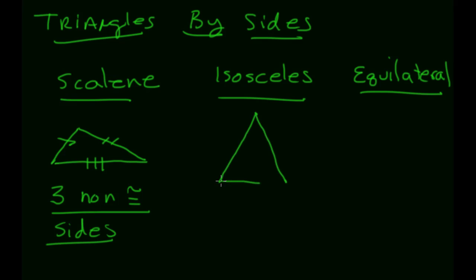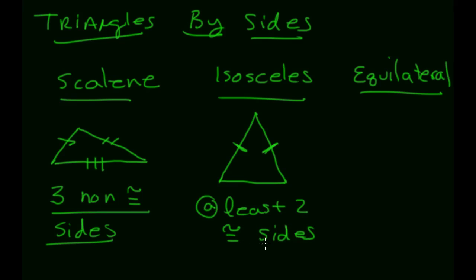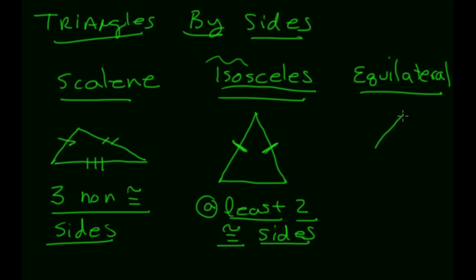An isosceles triangle must have at least two sides that are the same length — at least two congruent sides. It can have three congruent sides and still be isosceles. The prefix 'iso' means same, so isosceles means same size.